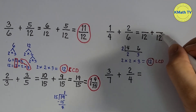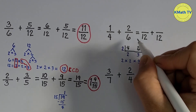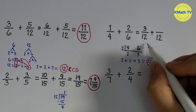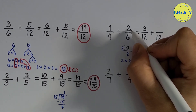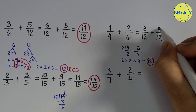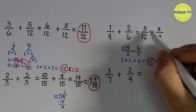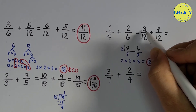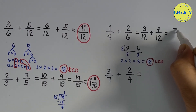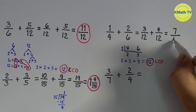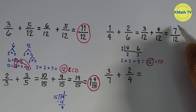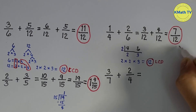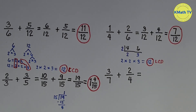Find the numerators: 12 divided by 4 equals 3; 3 times 1 equals 3. 12 divided by 6 equals 2; 2 times 2 equals 4. Third step is to add: 3 twelfths plus 4 twelfths. Add the numerators: 3 plus 4 equals 7, and copy the LCD 12. The answer is 7 twelfths. It is already in lowest term because 7 and 12 have no common factor aside from 1.